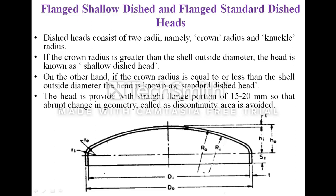On the other hand, if the crown radius is equal to or less than the shell outside diameter, the head is known as standard dished. The head is provided with a straight flange portion — this SF portion of 15 to 20 millimeters — so that the abrupt change in geometry, called the discontinuity area, is avoided, and the head can be easily welded or joined to the cylindrical shell, reducing localized stresses at that area.